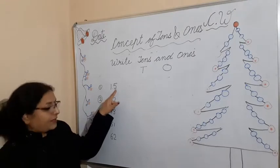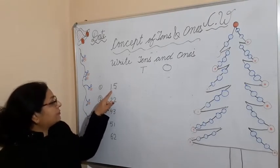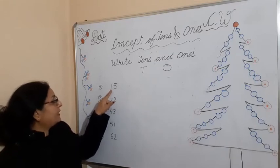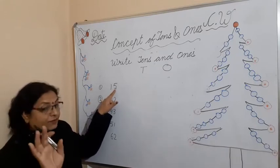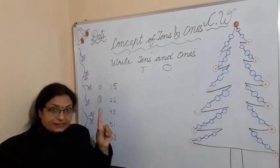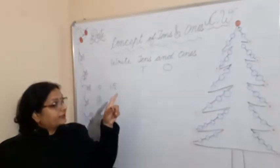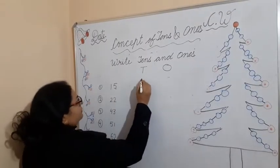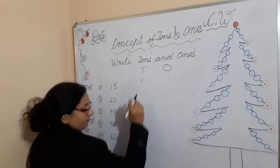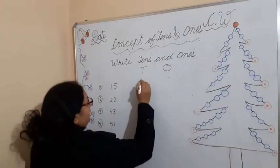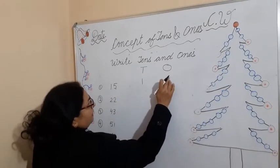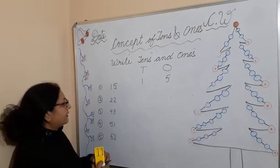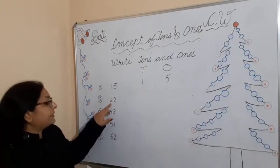For example, one and five — how many tens are here? One. How many ones are here? Five. You will write the tens under the heading of tens and the ones under the heading of ones. So write one under tens and five under ones.